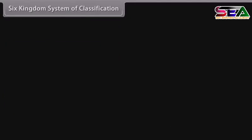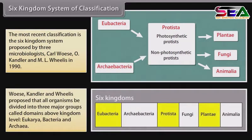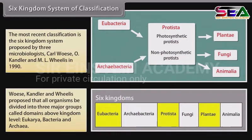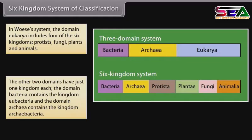Six Kingdom System of Classification. The most recent classification is the Six Kingdom System proposed by three microbiologists — Carl Woese, O. Kandler, and Emil Wheelis — in 1990. They proposed that all organisms be divided into three major groups called domains, above kingdom level: Eukarya, Bacteria, and Archaea. In Woese's system, the domain Eukarya includes four of the six kingdoms: Protists, Fungi, Plants, and Animals. The other two domains have just one kingdom each. The domain Bacteria contains the kingdom Eubacteria, and the domain Archaea contains the kingdom Archaeabacteria.